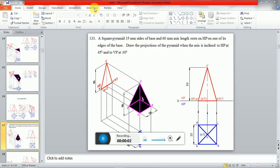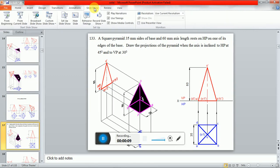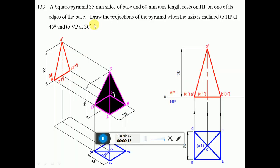A square pyramid of 35 mm side of base and 60 mm axis length rests on HP on one of its edges of the base. Draw the projections of the pyramid when the axis is inclined to HP at 45 degrees and to VP at 30 degrees.